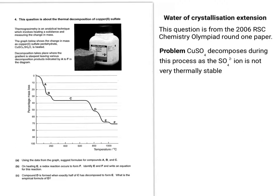Now the issue is that copper sulfate, whether it's hydrated or anhydrous, decomposes during this heating process. So what the graph shows you is the various stages of that decomposition. So what you've got to do in the first question is, using data from the graph, suggest formulae for compounds A, B, and C.